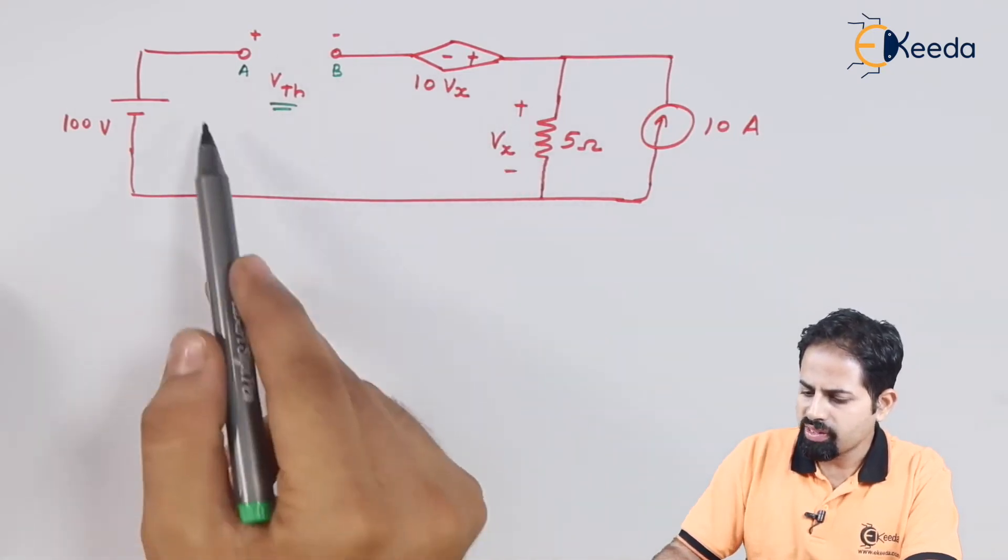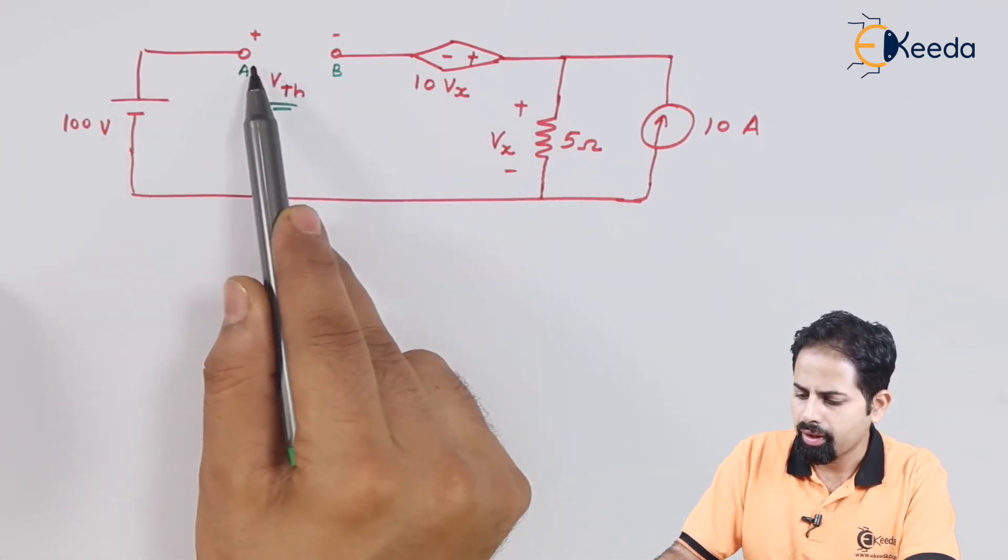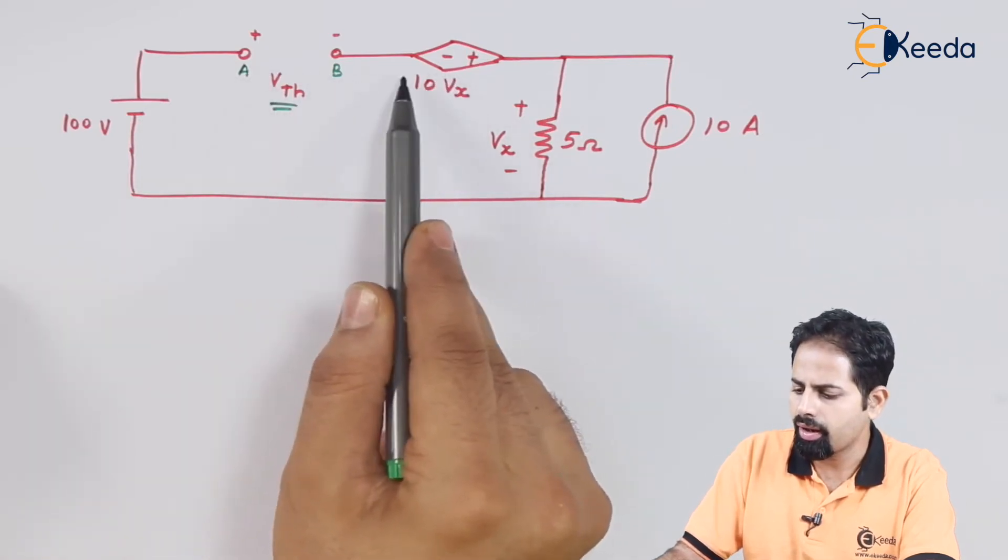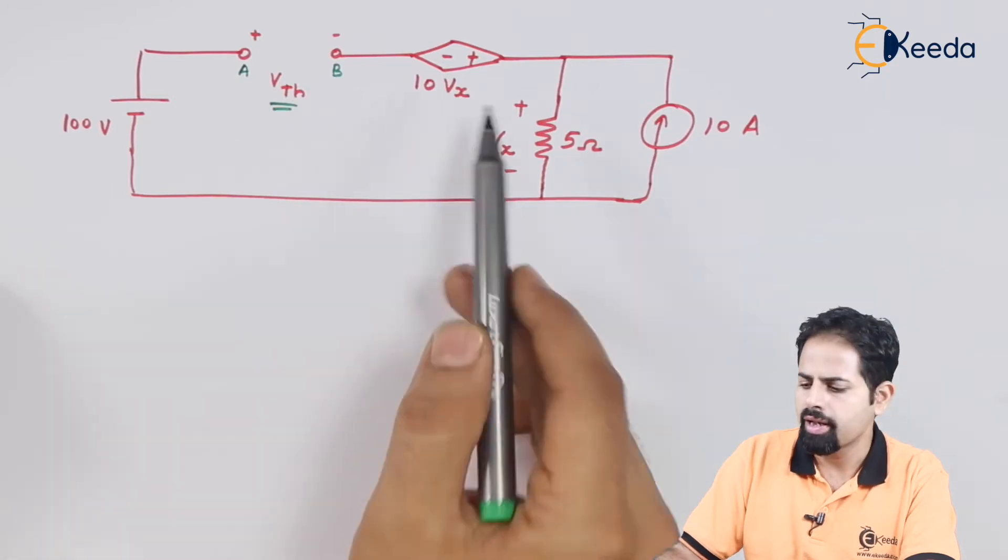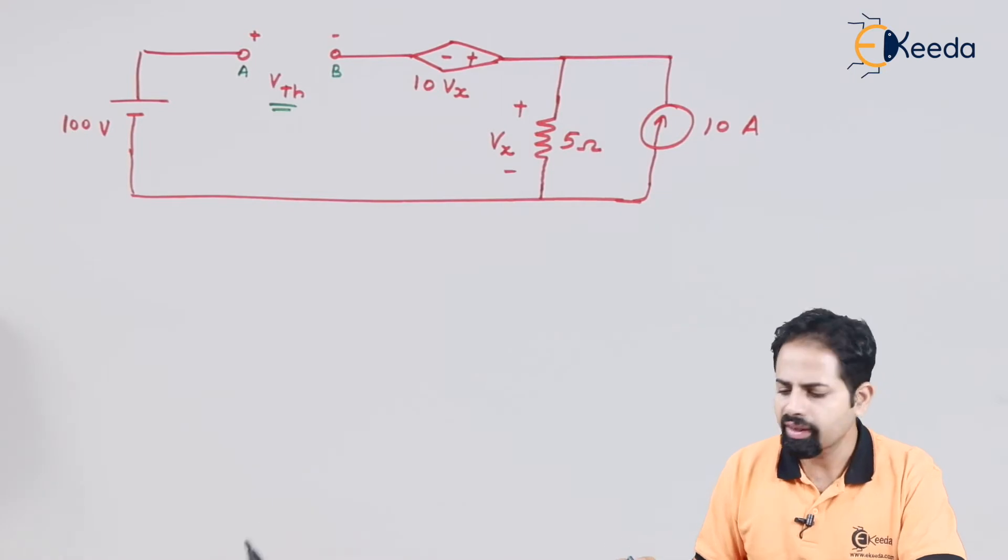Now, obviously we will apply KVL here and when we will apply KVL, we will get 100. Then plus to minus will be minus Vth and then again plus 10Vx. So this Vx will be unknown to us. But there is a mechanism to calculate this Vx.